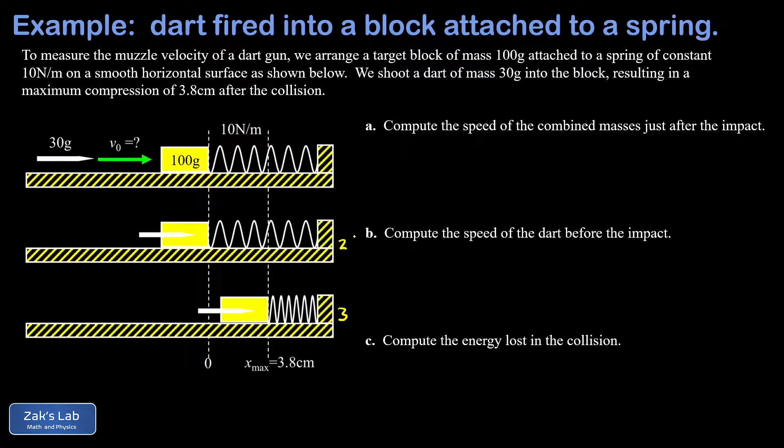We'll call that velocity V. Energy is conserved in this part of the process. In my initial state, I have the kinetic energy of the combined masses. I'll call that one half little m for the dart, big M for the block, so m plus M times V squared.